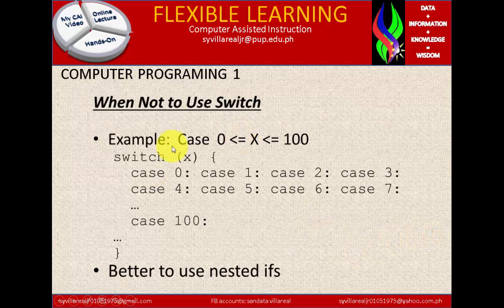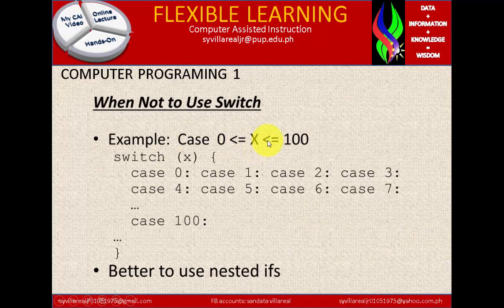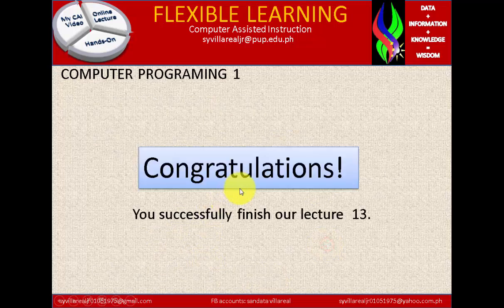When not to use switch? Example, case 0 is less than or equal to x and less than or equal to 100. So we cannot use switch if the condition is complex. Better to use negative.